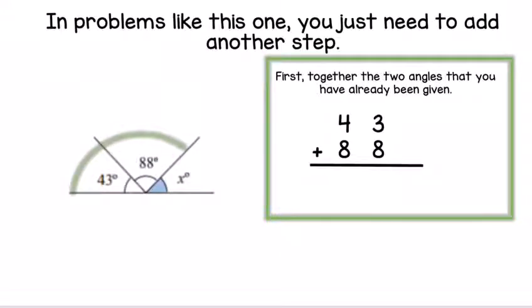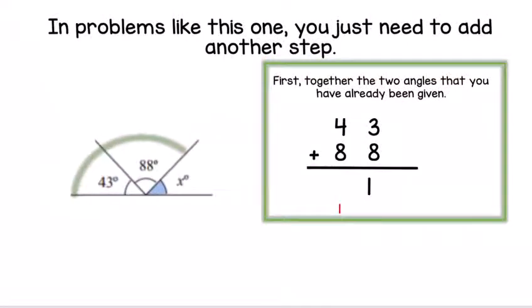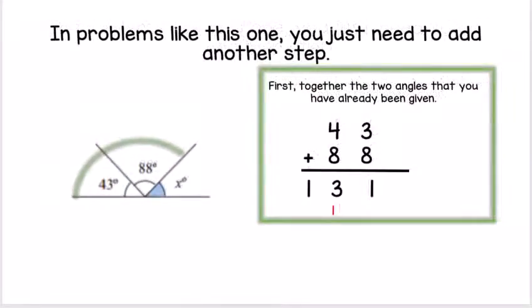In this case, we need to add together 88 and 43 using column addition. 3 add 8 is 11, so we put 1 in our ones column and carry over the other 1. Then 8 add 4 add 1 equals 13. Put the 3 in the tens column, carry over the 1. Now we know the two angles add up to a total of 131 degrees.